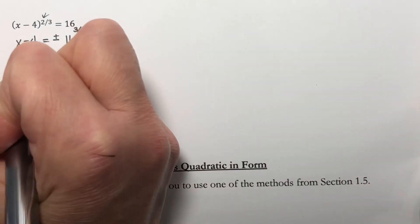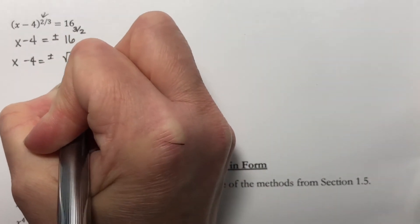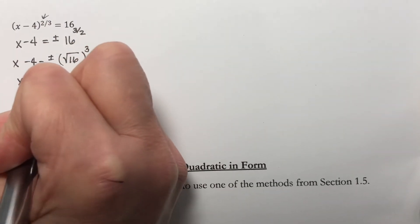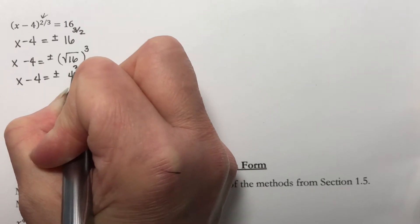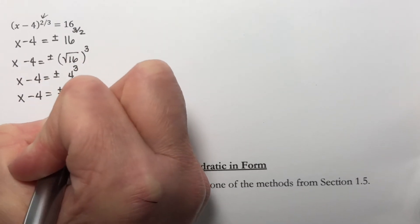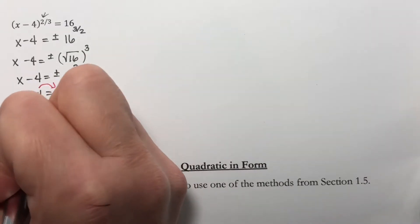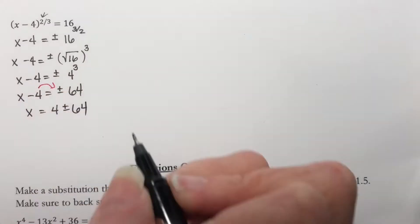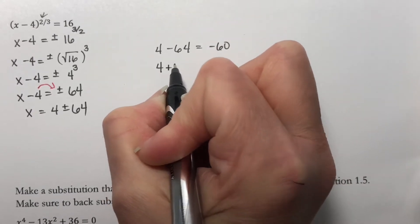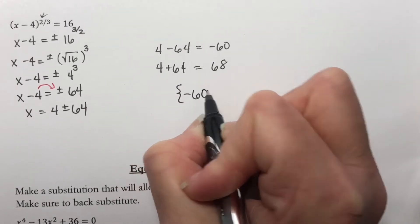So x minus 4 equals plus or minus the square root of 16 to the 3rd power. The square root of 16 is 4, so I have plus or minus 4 to the 3rd power. 4 to the 3rd power is 64. Moving the 4 over to the right, I have x equals 4 plus or minus 64. So I get 4 minus 64, which is negative 60, and 4 plus 64, which is 68. My two answers are negative 60 and positive 68.